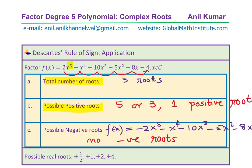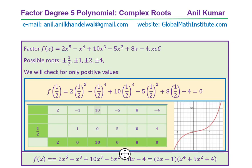That means instead of trying all 8 values — ±½, ±1, ±2, ±4 — we are now left with just 4 positive values: ½, 1, 2, or 4. We have eliminated 4 of the choices.